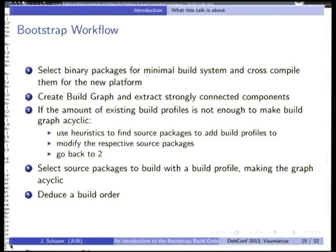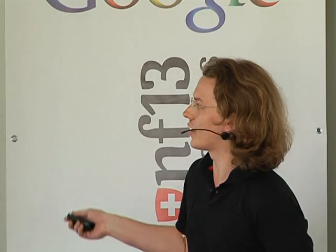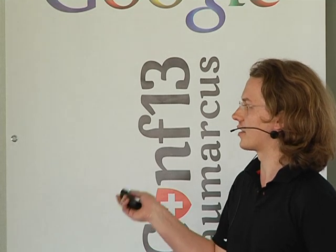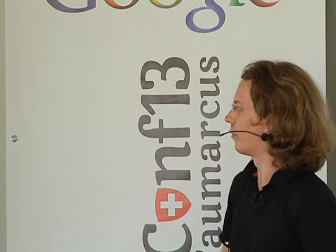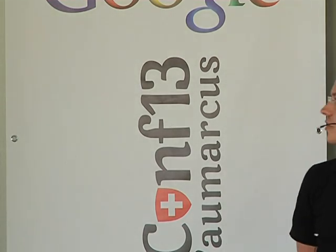From that minimal build system, you create a graph and extract strongly connected components, and analyze them using some heuristics to find source packages to add build profiles to. You modify them and go back until the graph is cycle-free. Then the algorithm selects the source packages to be profile-built, makes the graph acyclic, and gives you a build order.